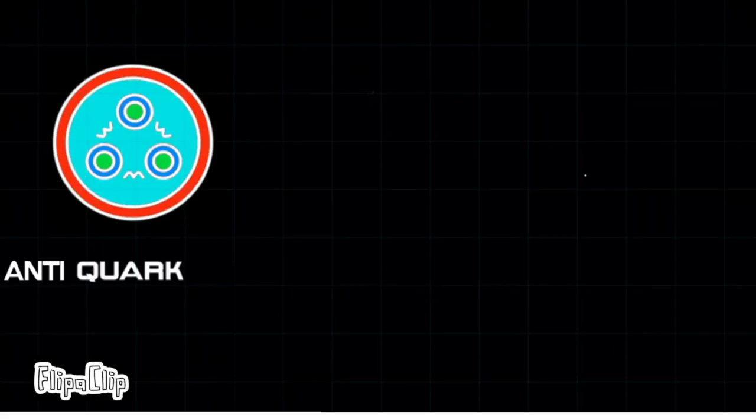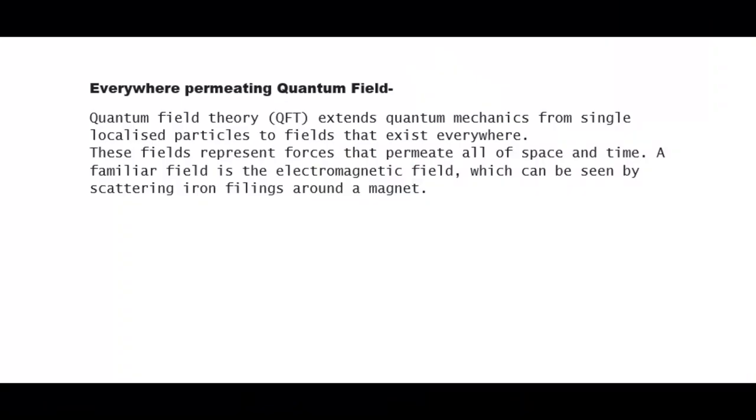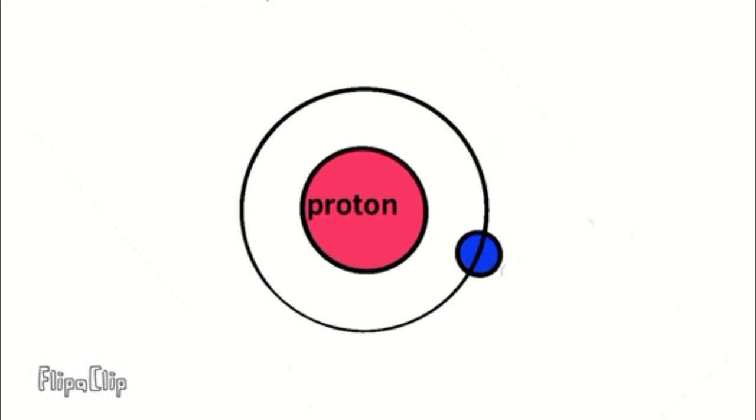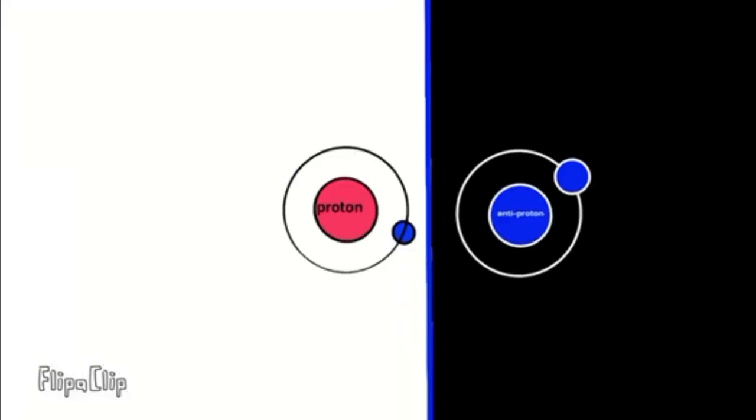for every particle, there is an equal and opposite antiparticle and opposite excitation in the everywhere permeating quantum field that has all the exact same properties as that particle except opposite charge. And since these antiparticles are opposite excitations of the quantum field, when a particle and an antiparticle meet, they annihilate and destroy each other.